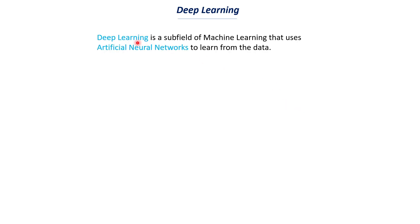First, let's understand what is meant by deep learning. Deep learning is a subfield of machine learning that uses artificial neural networks to learn from data. The keywords to note here are artificial neural networks and data. You have a dataset, and we use artificial neural networks — which are trained using this data — to find patterns and make future predictions.